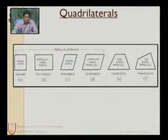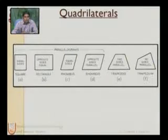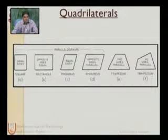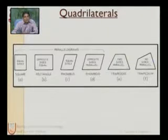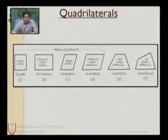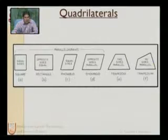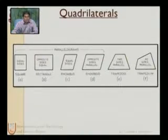A rectangle has two pairs of parallel sides where opposite sides are equal. The third quadrilateral type has two sides parallel to each other — two sets — and is frequently used in geometric construction.